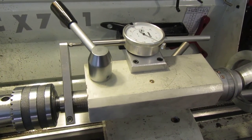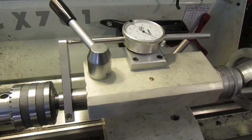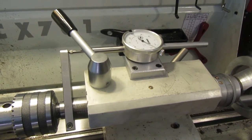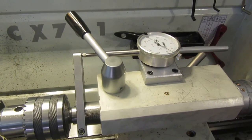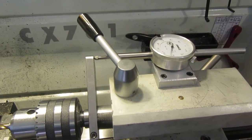DROs are marvelous things. They'll tell you where your cross slide is and they'll tell you where your carriage is, but they really don't tell you too much about how far your tailstock is extended or retracted.